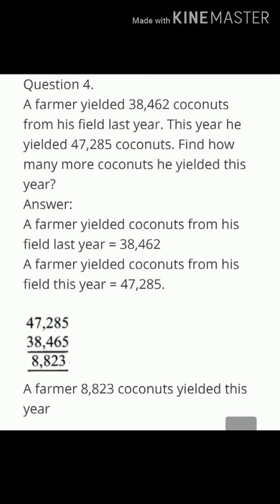In the last year, he yielded 38,462. Now from his field this year, 47,285. So, the difference is 8,823 more coconuts he yielded this year.